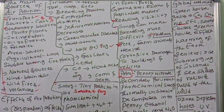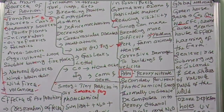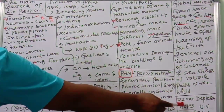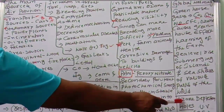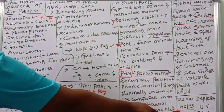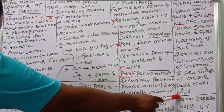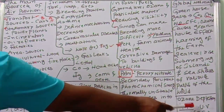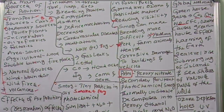Ozone depletion is another major effect. Ozone protects us from UV rays coming from the sun, acting like a blanket. But chlorofluorocarbons damage the ozone layer in the stratosphere, causing holes to form. As a result, UV rays directly reach our skin and cause skin cancer.